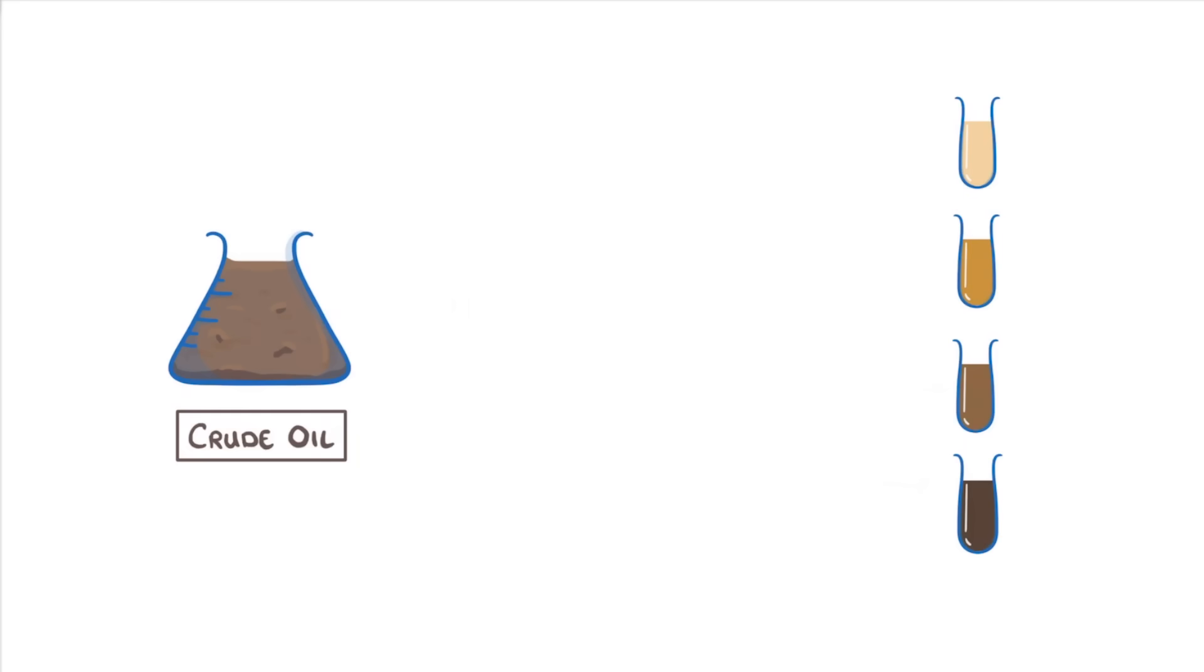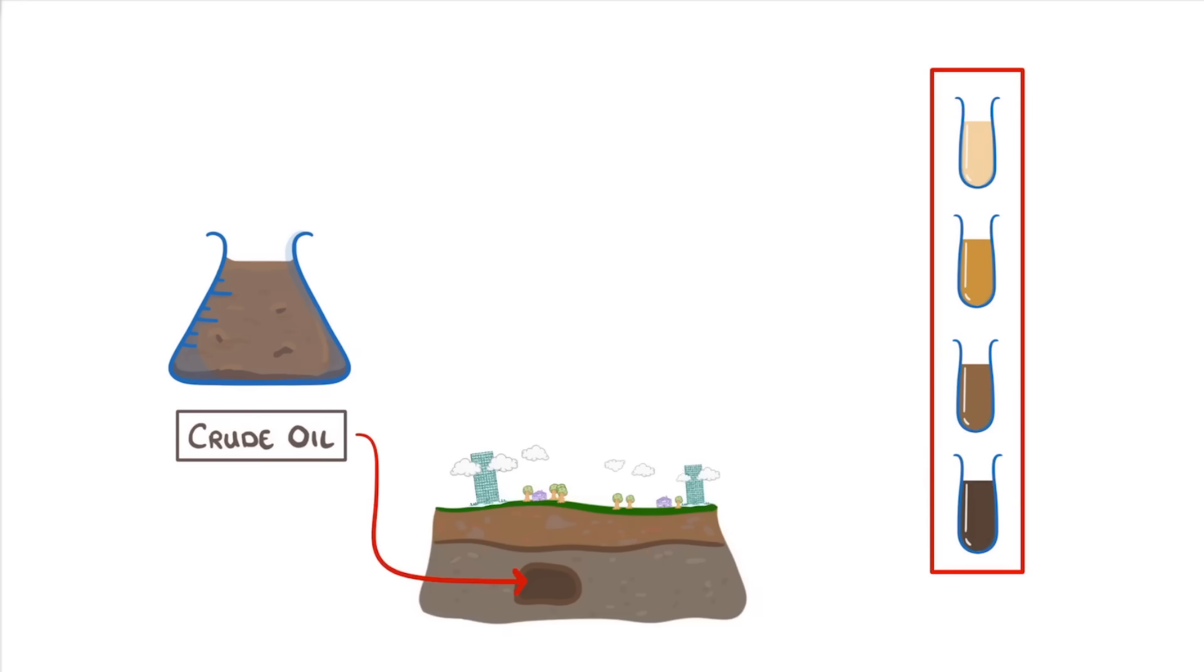Crude oil is a fossil fuel that we get from deep under the ground and is basically a mixture of lots of different compounds. Nearly all of these compounds are hydrocarbons, which contain only hydrogen and carbon. And the most common type of hydrocarbons are alkanes, which we covered in the last couple of videos.